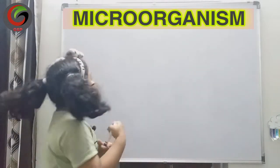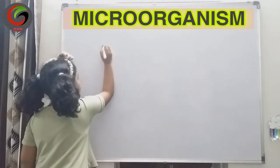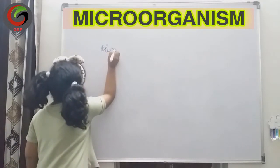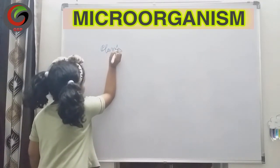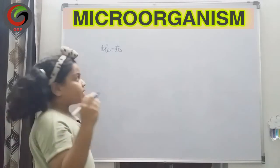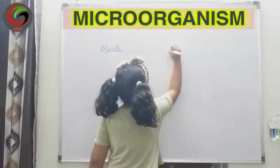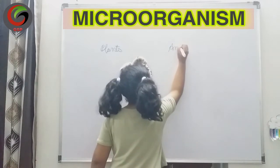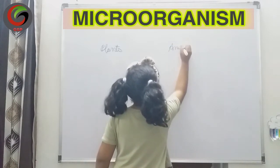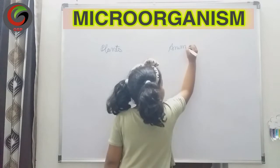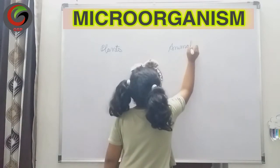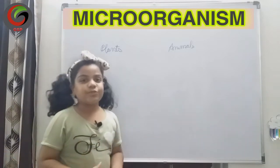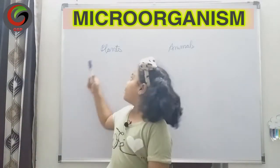The first microorganisms are plants, and the second are animals. First, we will learn about the microscopic plants.